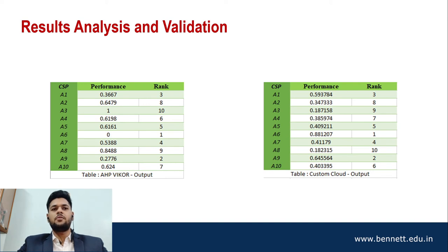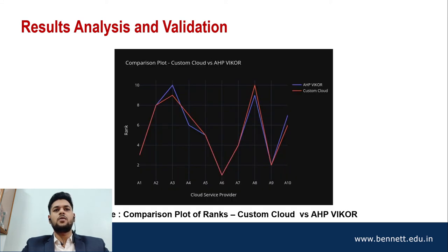For validation and comparison with the existing research paper solution that applies AHP with YCOR, the ranks are written in the table on the left-hand side. Here also, A6 picks the first rank, A9 the second, and A1 the third. Therefore, on plotting the comparison plot of Custom Cloud versus AHP-YCOR, we see that the graph is consistent and, henceforth, our algorithm works.